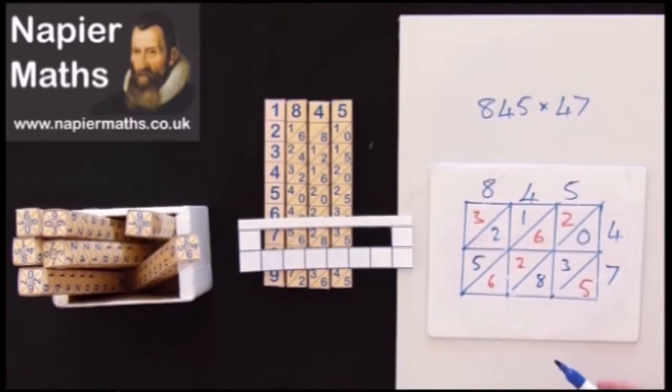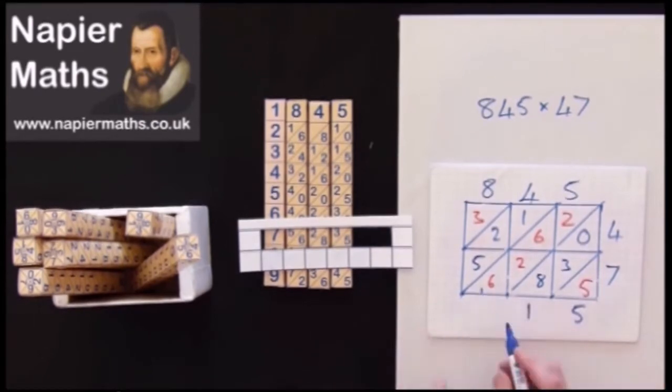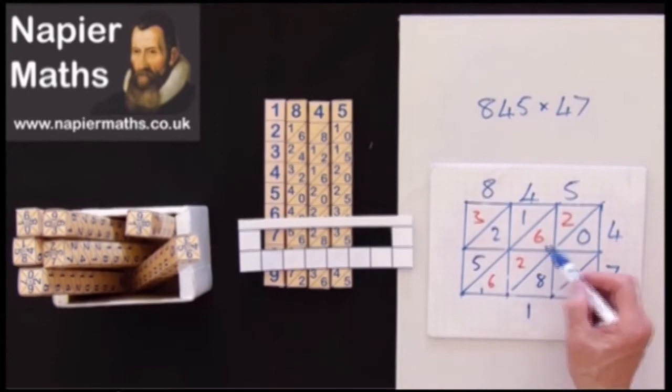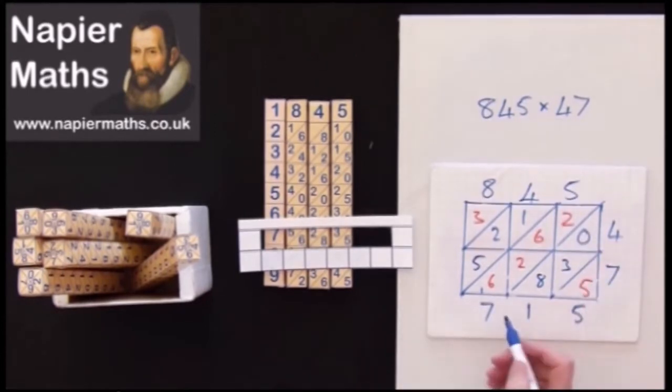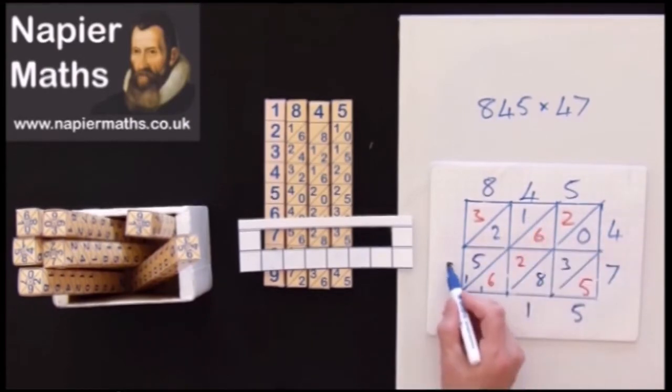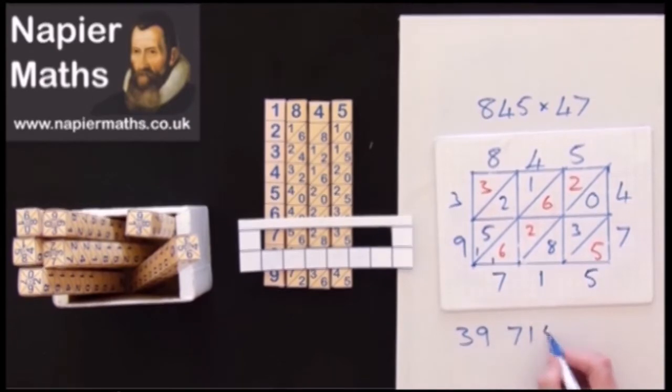All you do now is add down the diagonals. Down that diagonal gives you 5. That diagonal gives you 8 and 3 is 11. We get 1 and 6 is 7, 9, 15, 17. Carry the 1, you get 6, 7, 8, 9 and you've got a 3 there. So our answer is 39,715.